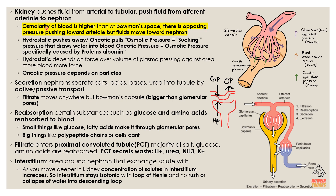The kidney pushes fluid from the renal artery to the tubules, and pushes fluid from the afferent arteriole into the nephron to begin filtering the blood. The osmolarity of the blood is higher than that of the Bowman's space — there is opposing pressure pushing toward the arteriole — but fluids ultimately move toward the nephron.